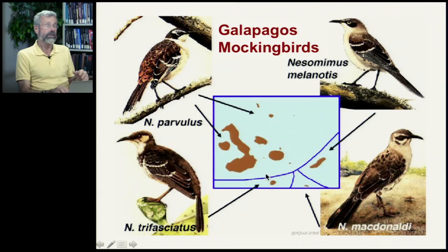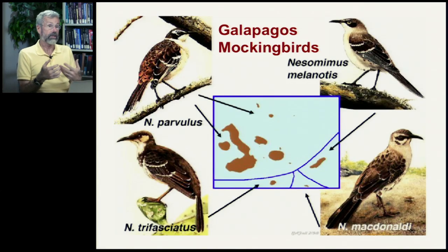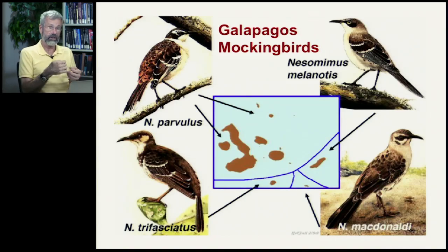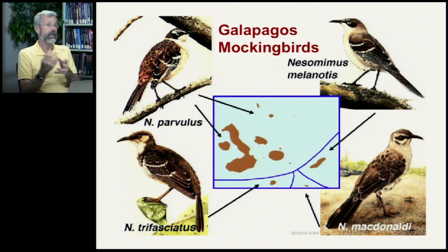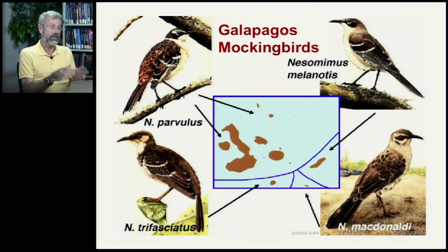This gets back to Darwin's notion that the Galapagos finches must have had a single ancestor that came over and diversified while they were out there. They're more similar to each other than they are to anything back on the mainland. That's likewise true with the Galapagos mockingbirds.